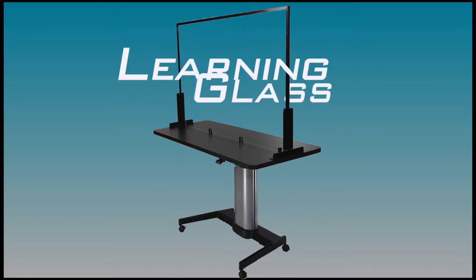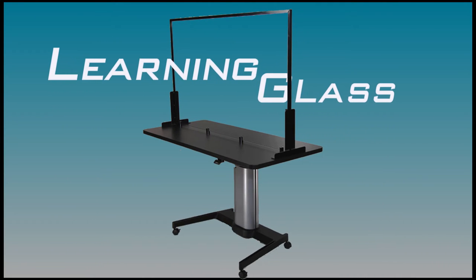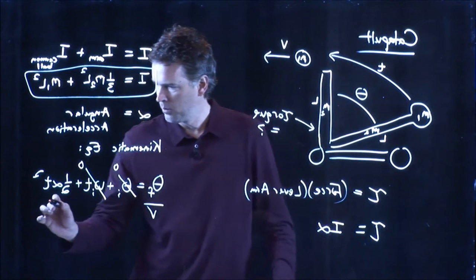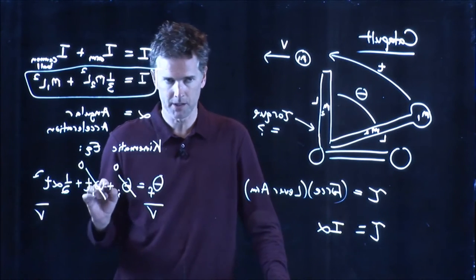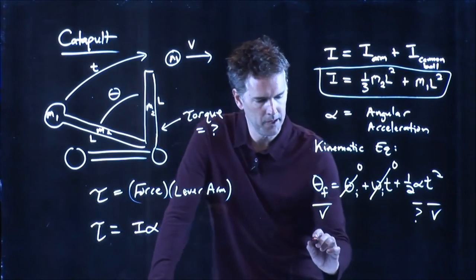Learning Glass consists of a side illuminated transparent screen paired with a lecture capture system. The instructor lectures while facing the camera, and with a simple horizontal flip of the image, the writing appears in its correct orientation.